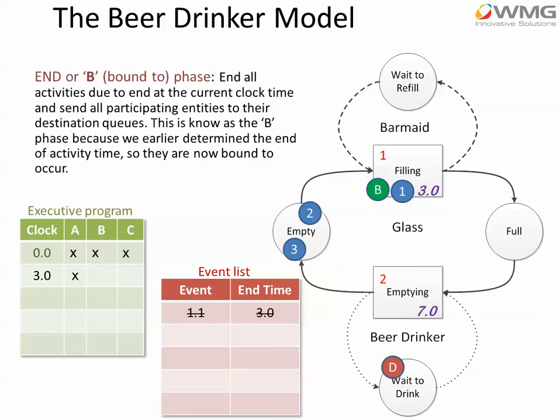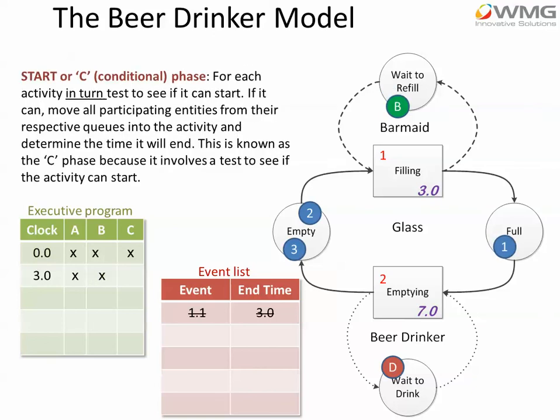The B phase says: end all activities due to end at the current clock time. The current clock time is time three. Send all participating entities to their destination queues. This is known as the bound phase because it's only dependent on the passage of time — there is no condition testing. When time three comes up, we move the glass into its full queue and the barmaid goes back to wait for a refill. We put a line through the event in the event list because it's now finished. There's nothing else bound to happen at time three, so we're back at the start phase.